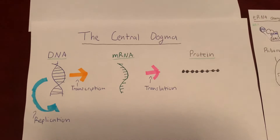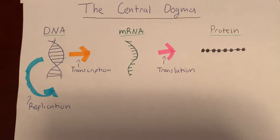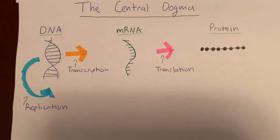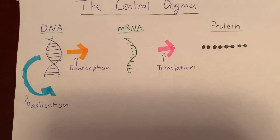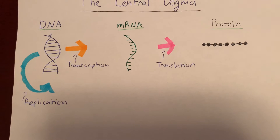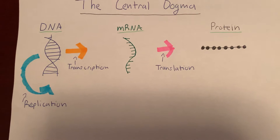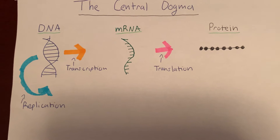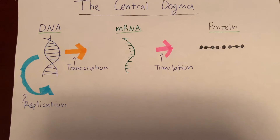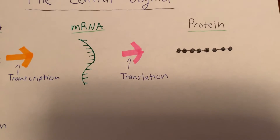First, let's talk about the central dogma. DNA can either be replicated to make more DNA, or can go through transcription to make mRNA, and then mRNA can go through translation to make the final product — a protein.